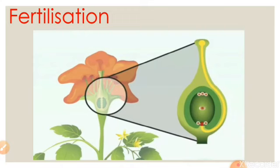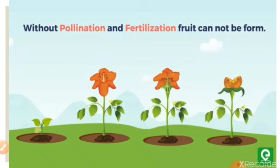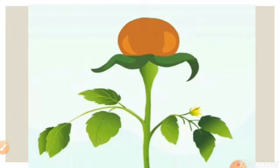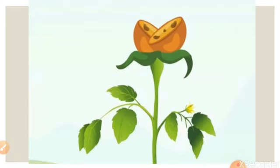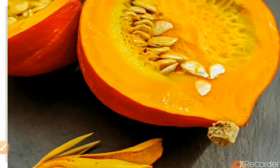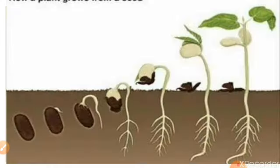After pollination and fertilization, the ovules develop and become seeds. The sepals, petals, and stamens fall off. The ovary starts to store food and swells up to form the fruit. The fruit protects the seeds and helps in their dispersal. Fruits may be fleshy or dry and may have one seed or many seeds. Under favorable conditions, the seeds germinate into a seedling and new plants arise from seeds.